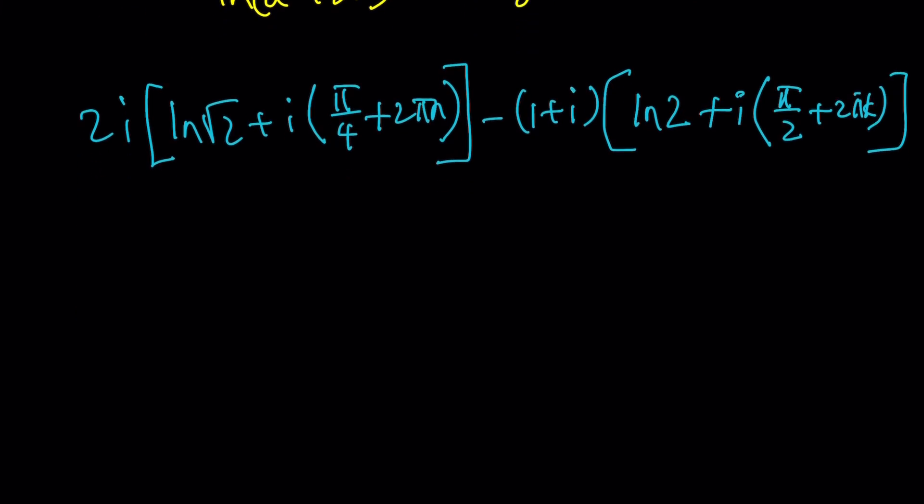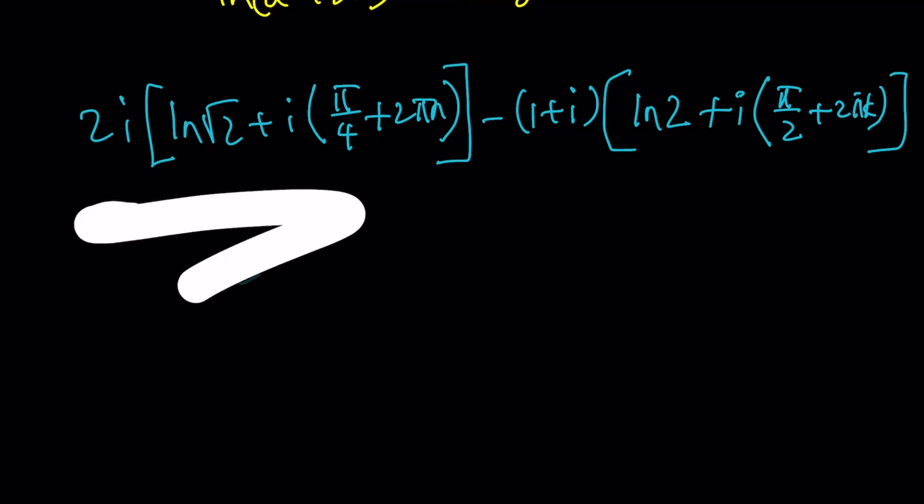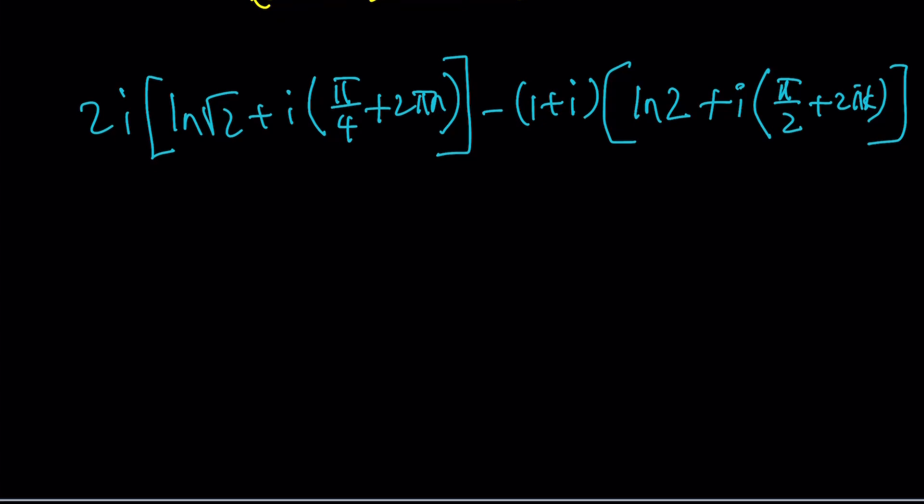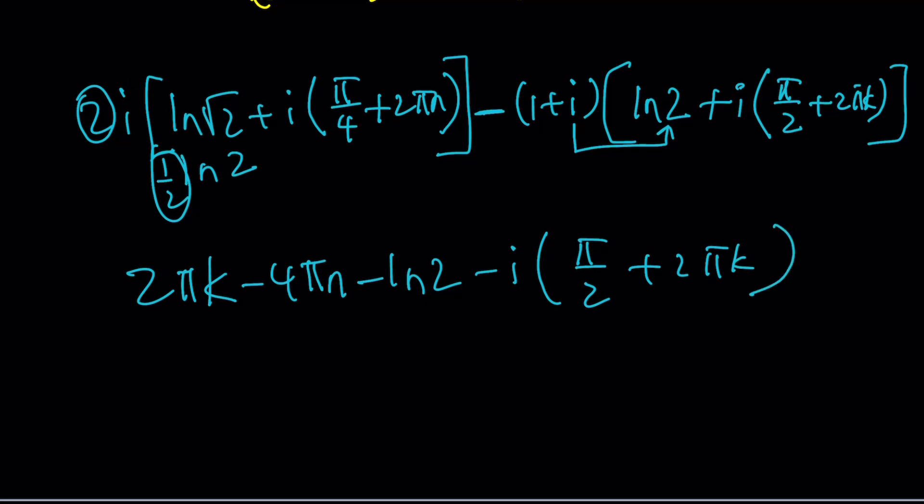If you go ahead and distribute this whole thing, you're going to get ln 2 minus pi over 2 minus 4 pi n minus ln 2 minus i times pi over 2 plus 2 pi k. So what happens is, ln root 2 can be written as 1 half of ln 2, and 1 half and 2 are going to cancel out. So that's going to leave us with i ln 2. And there's another i ln 2 that comes from here, but that's with a minus sign, so they're going to cancel out. So that should be 4 pi n minus ln 2 minus i times pi over 2 plus 2 pi k. Still quite complicated, and this is just the exponent.